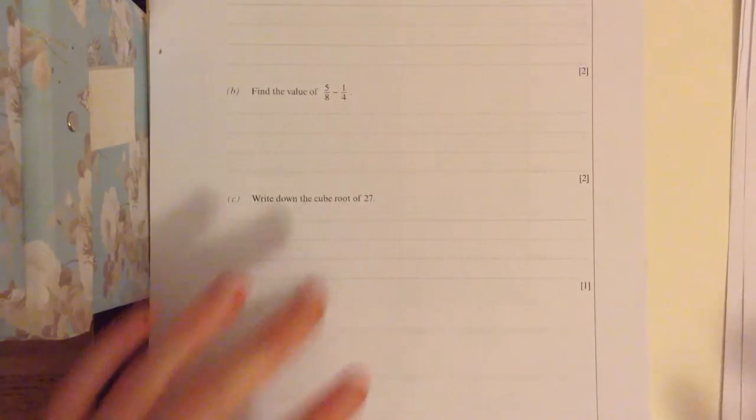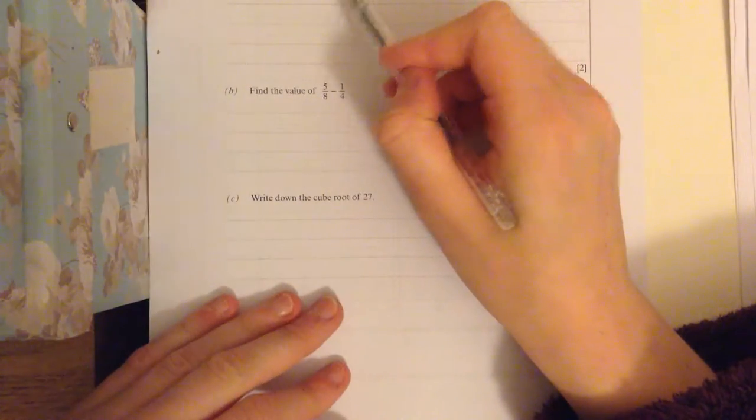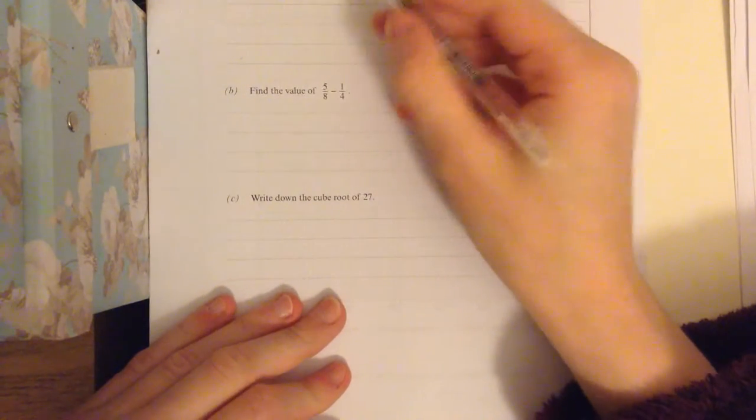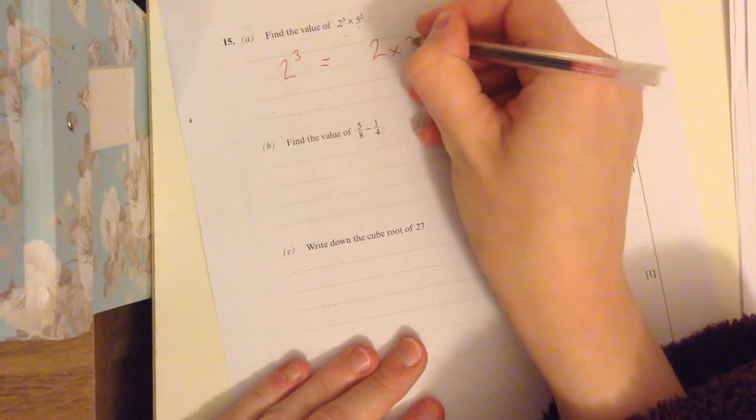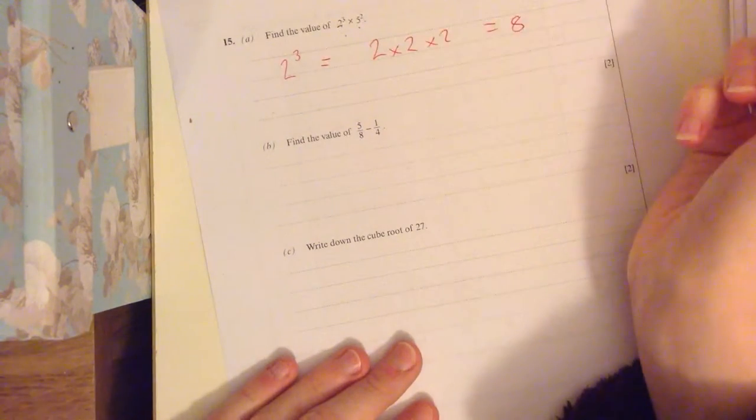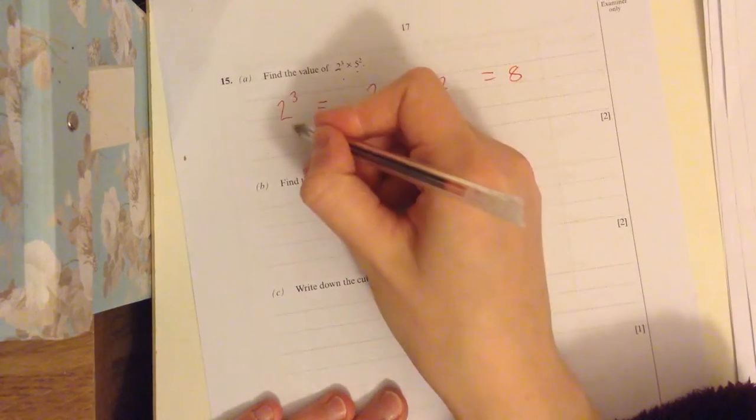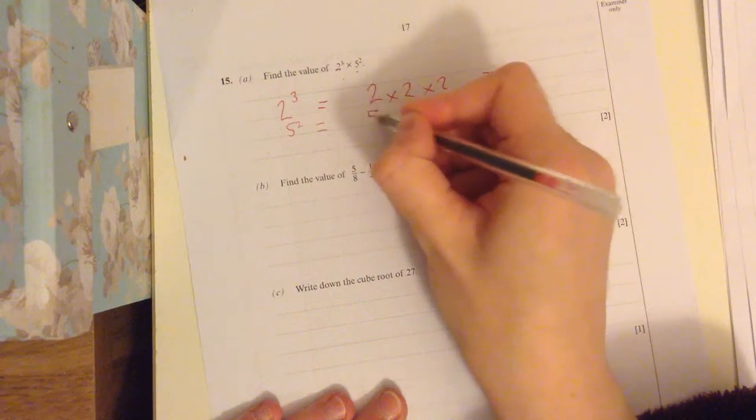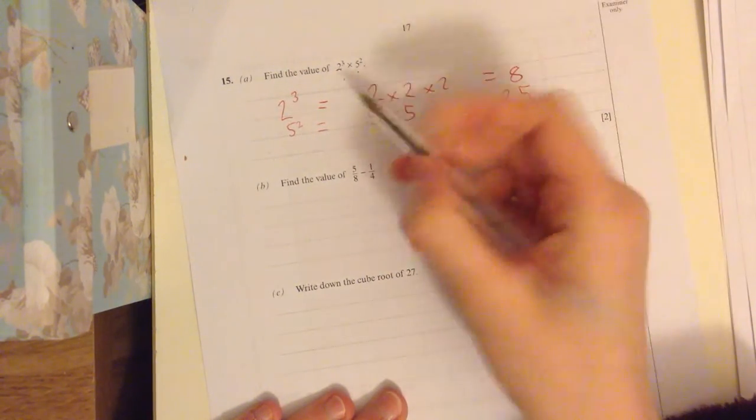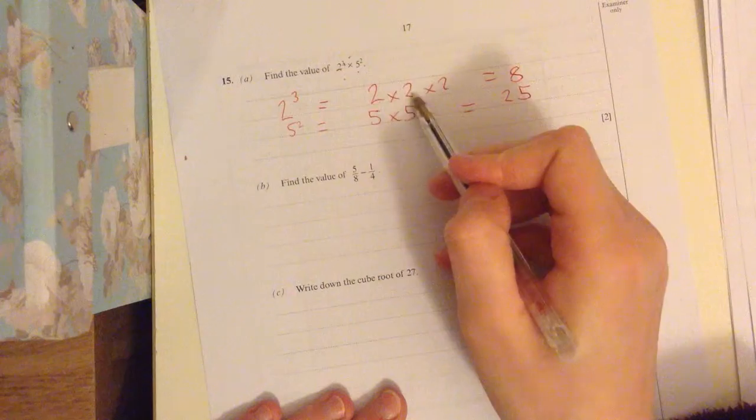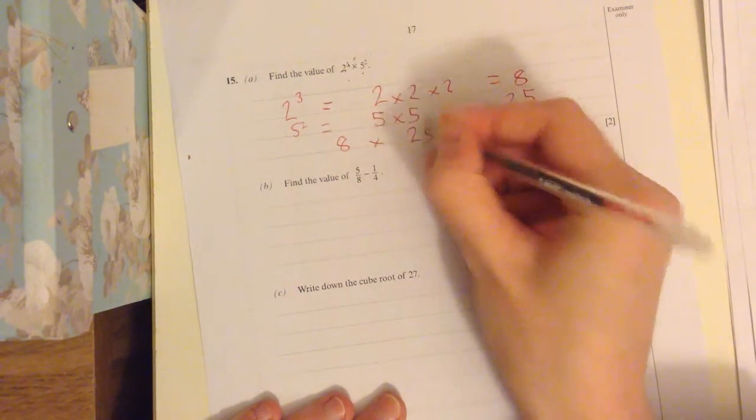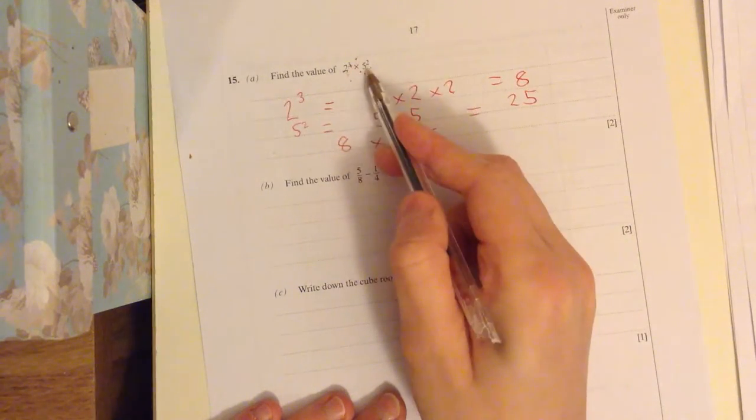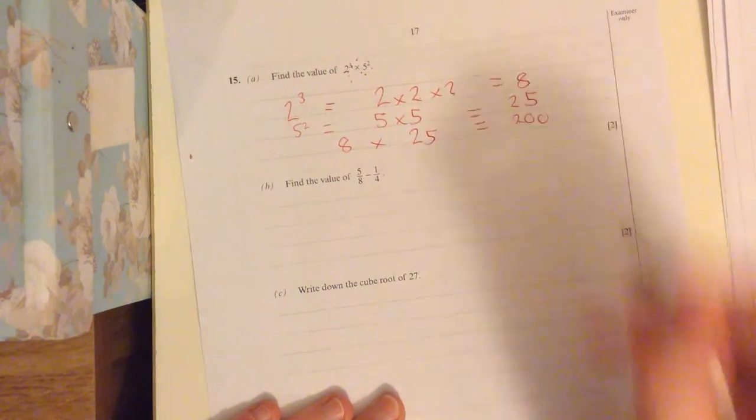Question fifteen. Indices question. Now remember, the big number is different. So we have to work at each part separately. It's got two to the power of three. So two to the power of three is the same as two times two, times two, which is eight. Five to the power of two is the same as five times five is twenty-five. Remember, this means how many times you write out the big number, and then you multiply them. So we have eight times twenty-five. We've got eight times twenty-five, which is just going to be two hundred.